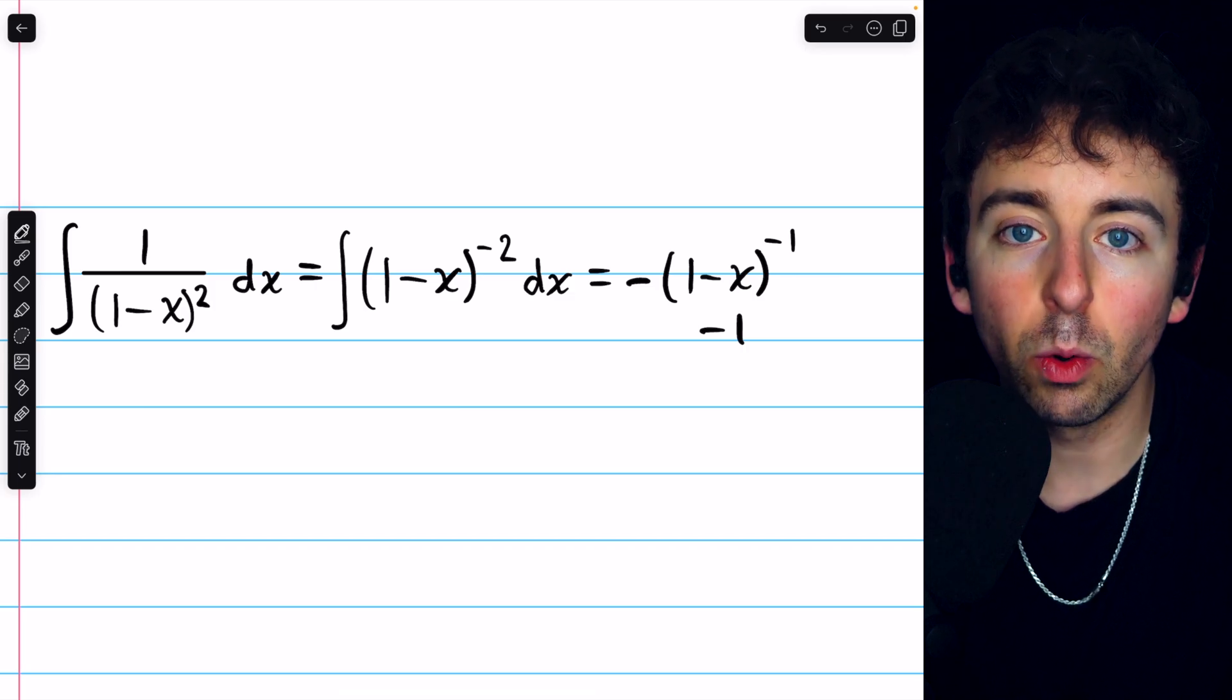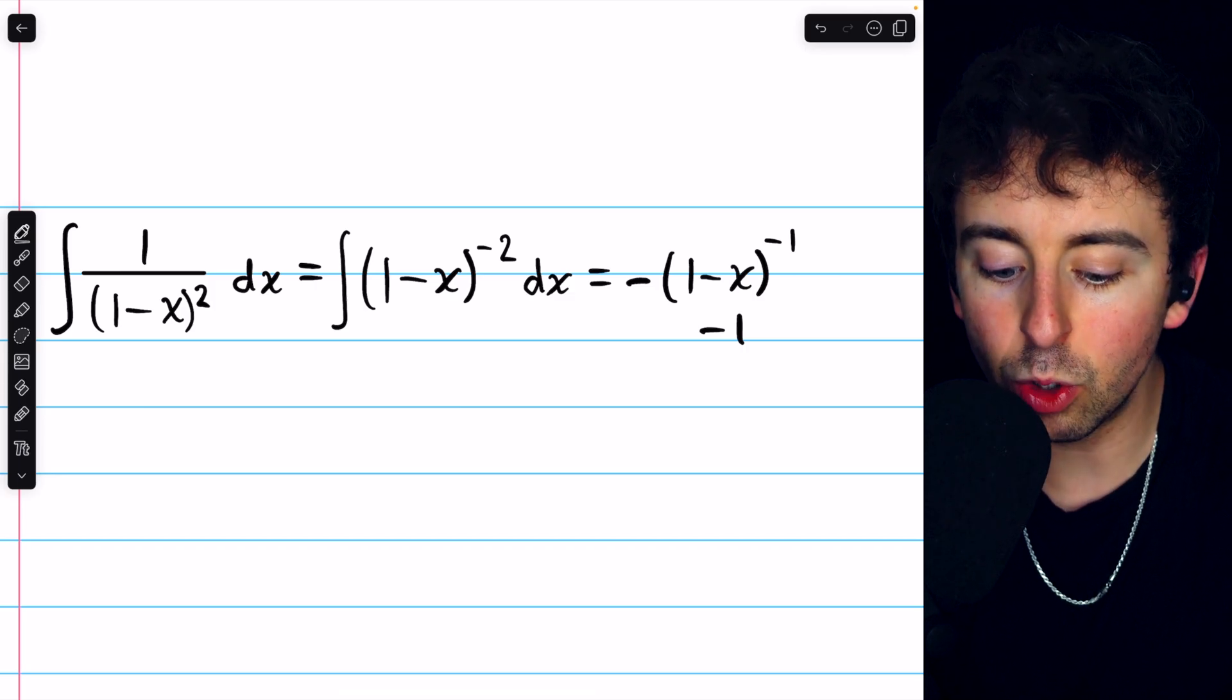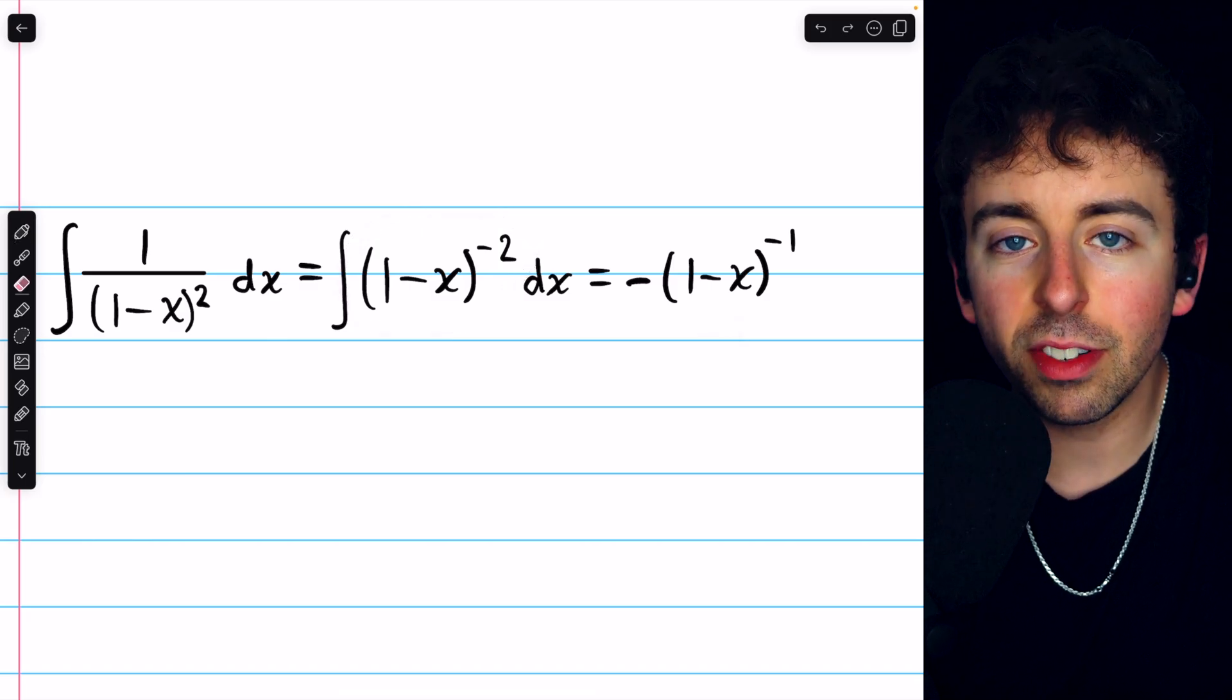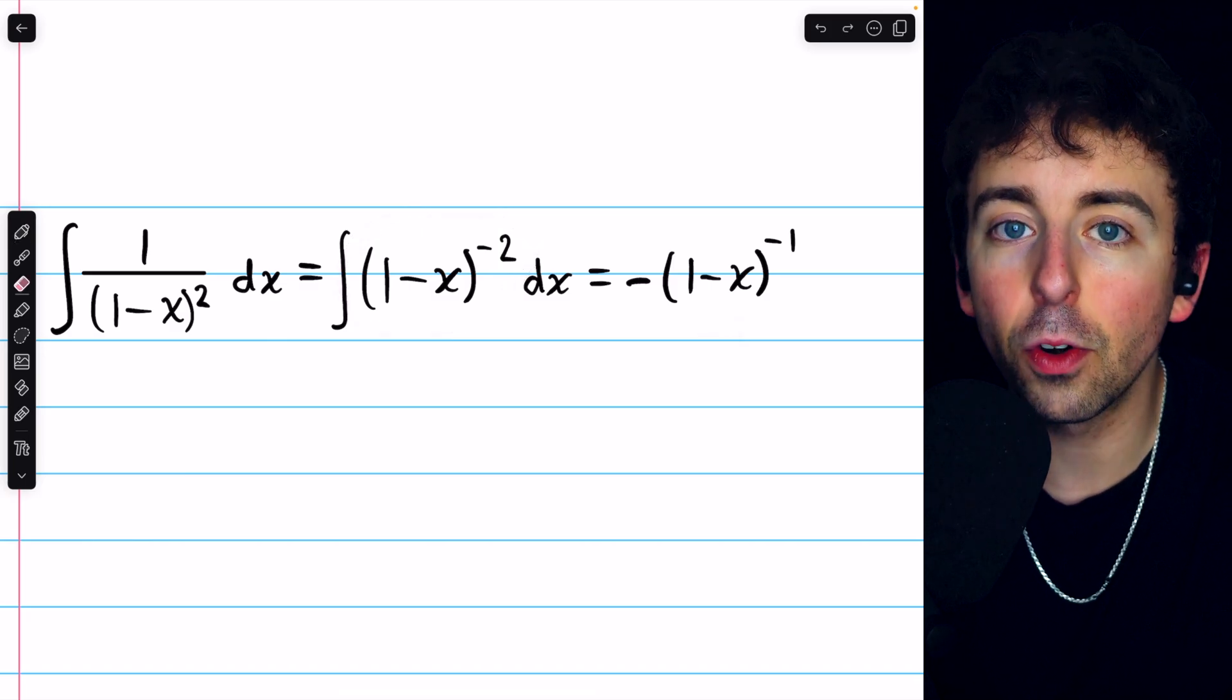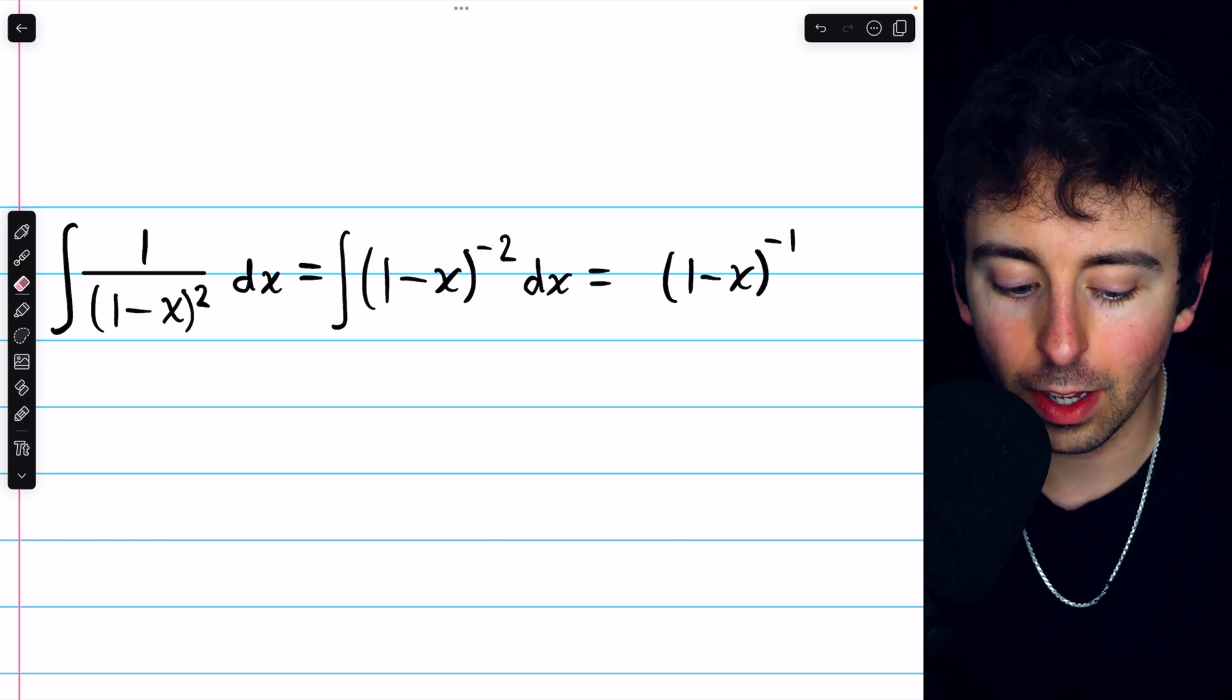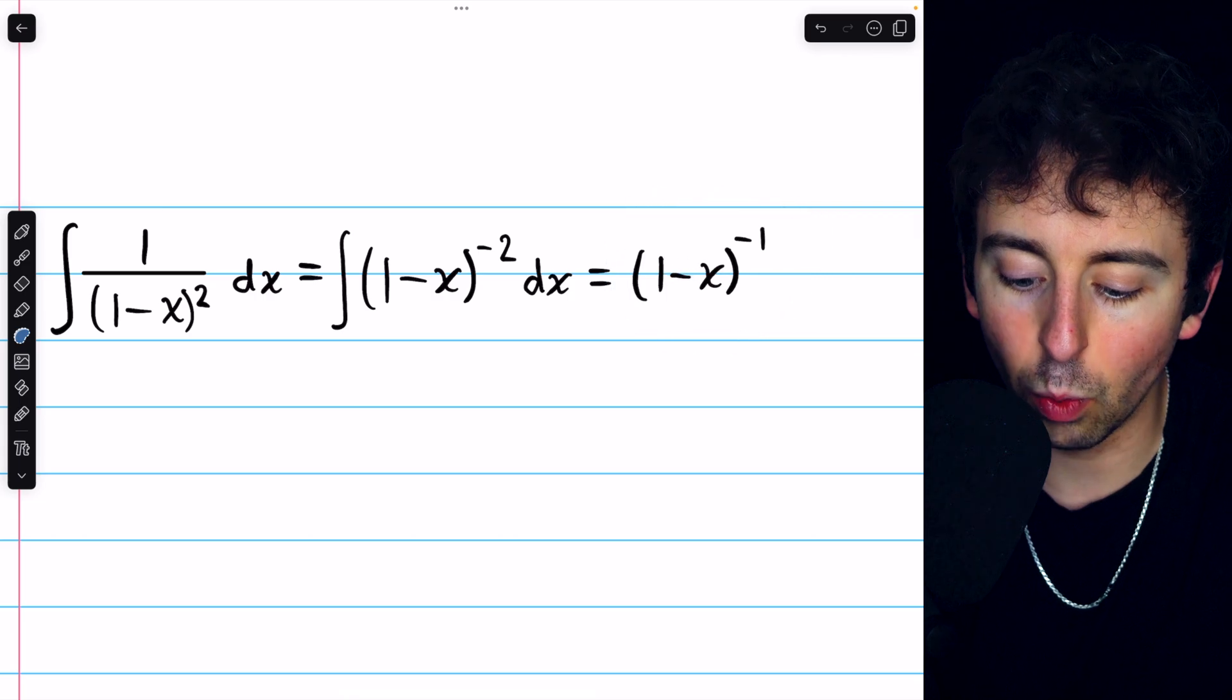And if we took the derivative, we would have that negative, which we don't see here in the integrand. So to correct for that, we just have to multiply by another negative factor, which means we just need to cancel out this negative here. And now this is going to work.